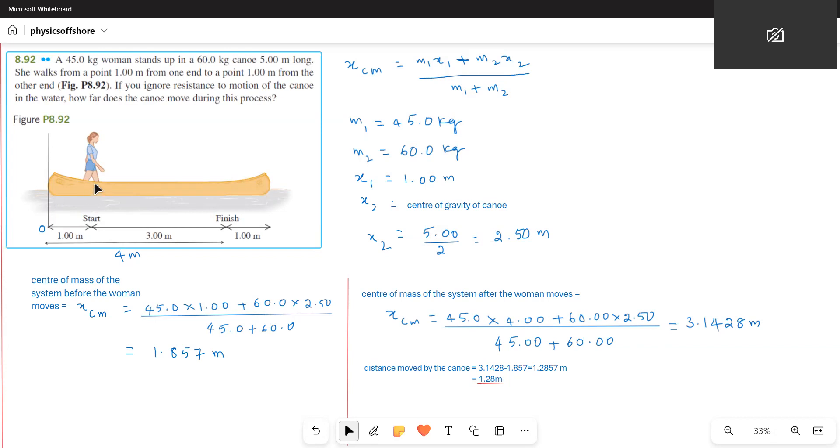Now we have to calculate. This lady walks across the canoe and reaches the other end 1 m before the end of the canoe. That means she walks 3 m because the total length of the canoe is 5 m. She is standing 1 m from one end and reaches 1 m before the end. That means total 3 m as she walks.